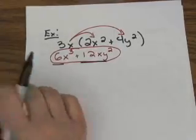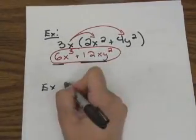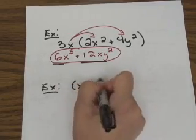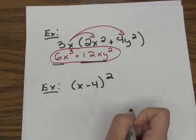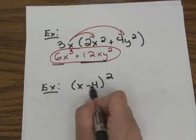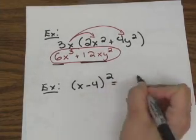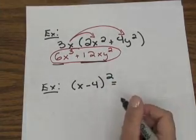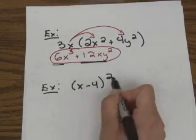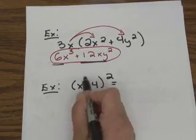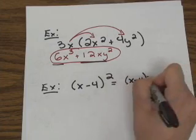Another example is x minus 4 squared. Many students want to square both terms individually, but that way you'll miss a middle term. It's important to understand that when a set of parentheses is being squared, the whole thing gets squared. So in reality, you're going to have x minus 4 times x minus 4.